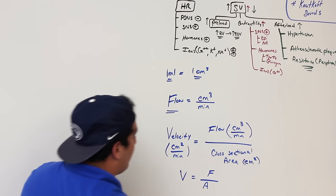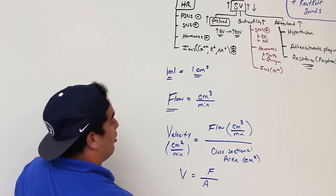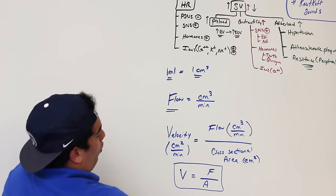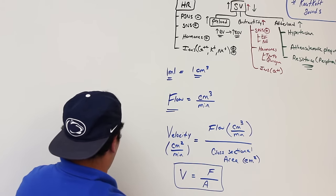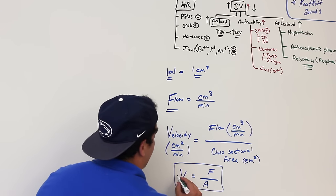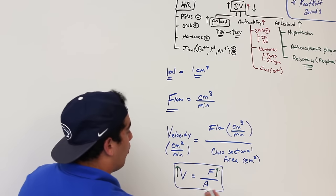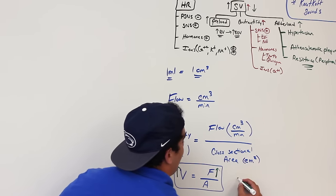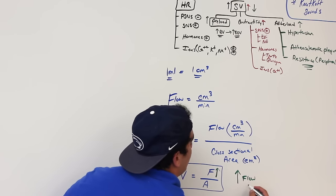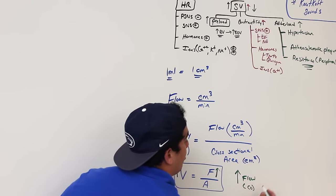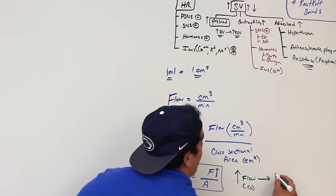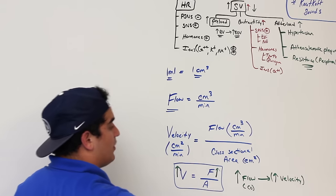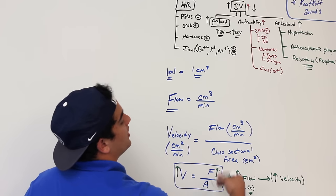The velocity of blood flow increases with increasing flow, which is the same as saying increasing cardiac output. So if there is an increase in your flow or cardiac output, there is going to be an increase in the velocity of the blood.